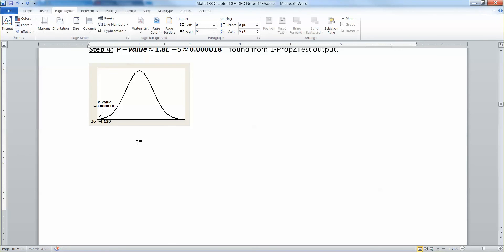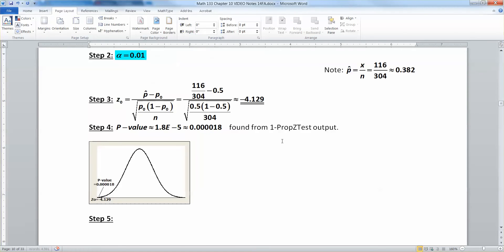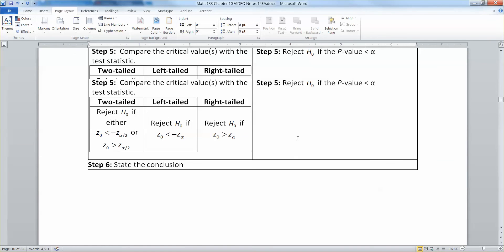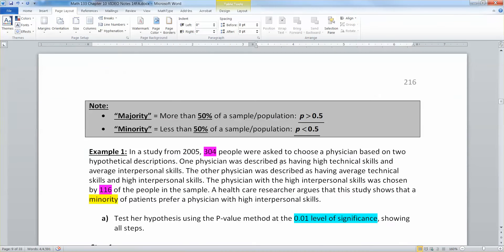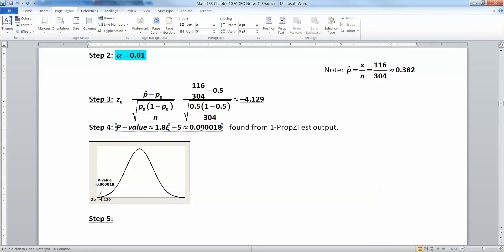Alright. Then, step five. We need to make a decision. So, we either reject or do not reject the null hypothesis. You reject if your p-value is less than alpha. Since p-value is this number right here that we just found, we are going to reject H naught.